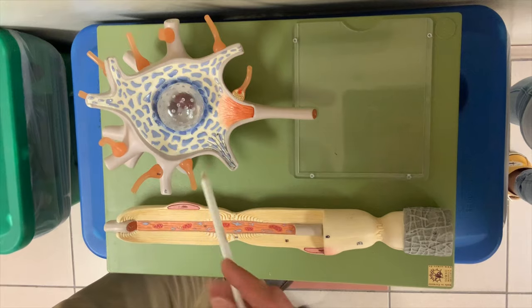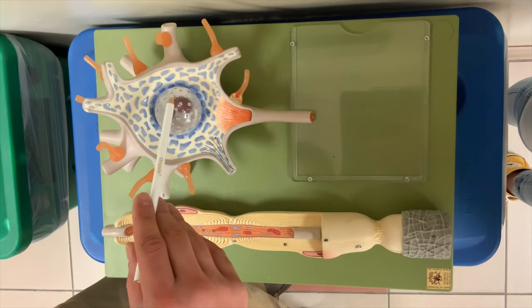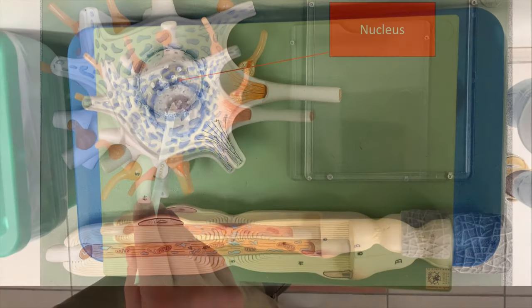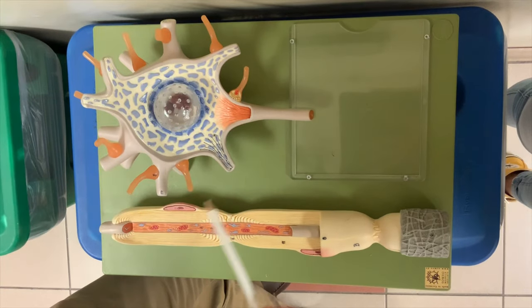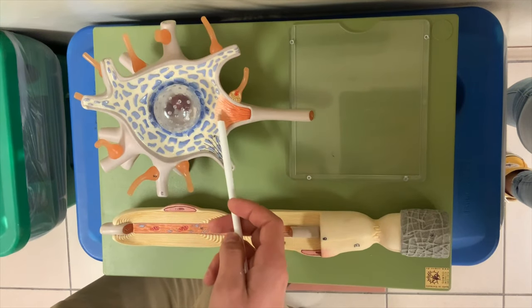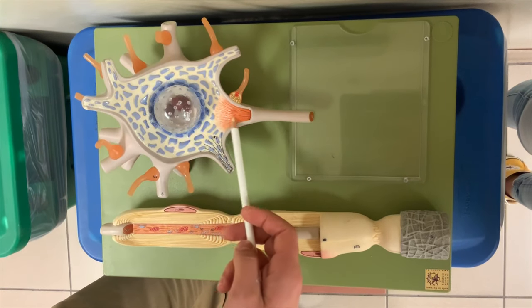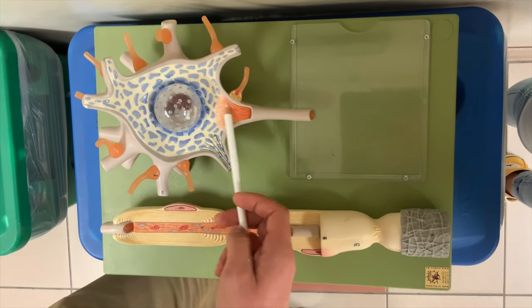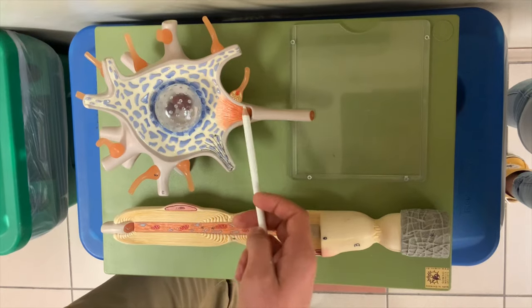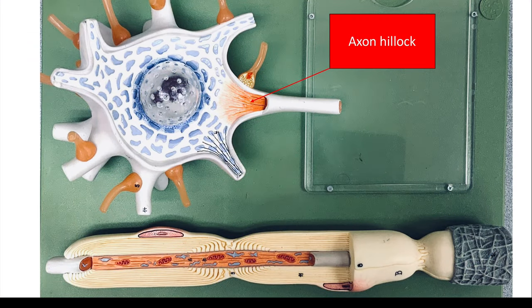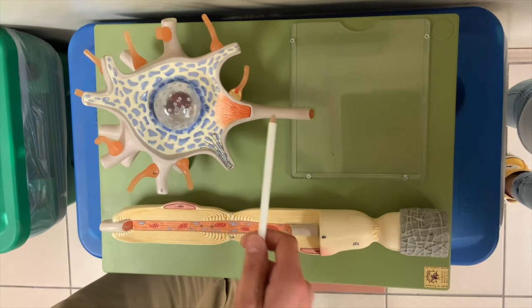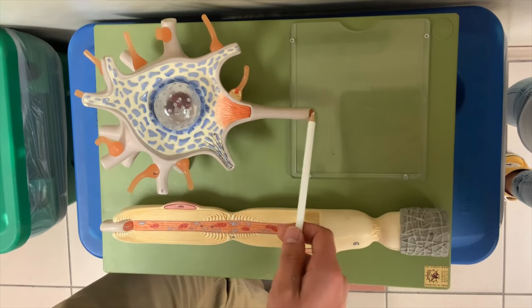We have the nucleus. And over here, the most sensitive part of the neuron is called the axon hillock. And then here's the axon itself.